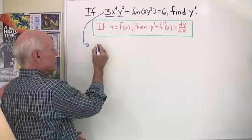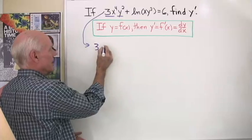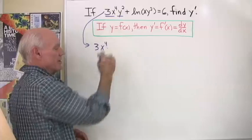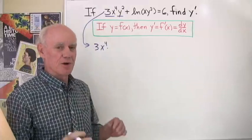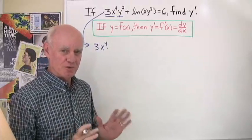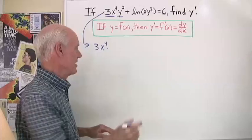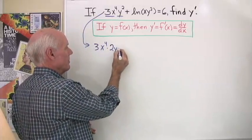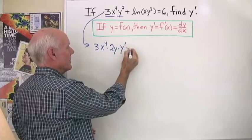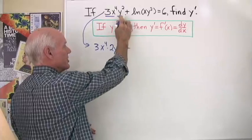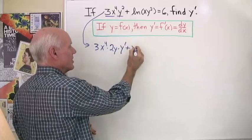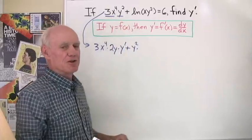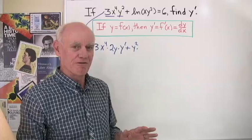So I'm going to start with the first — 3x to the fourth — times the derivative of the second. When I differentiate y squared with respect to x I get 2y times y prime, plus the second, y squared, times the derivative of the first.